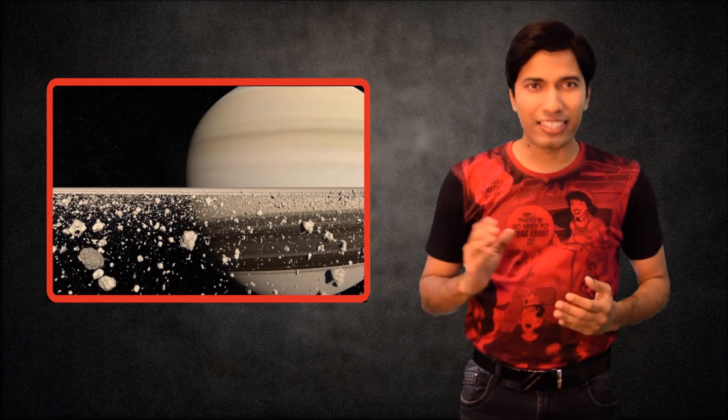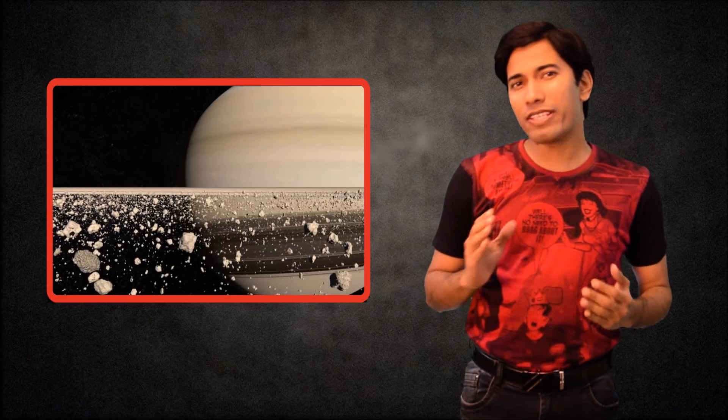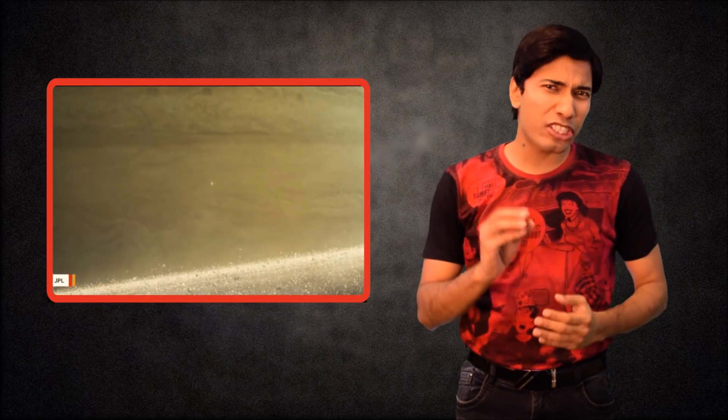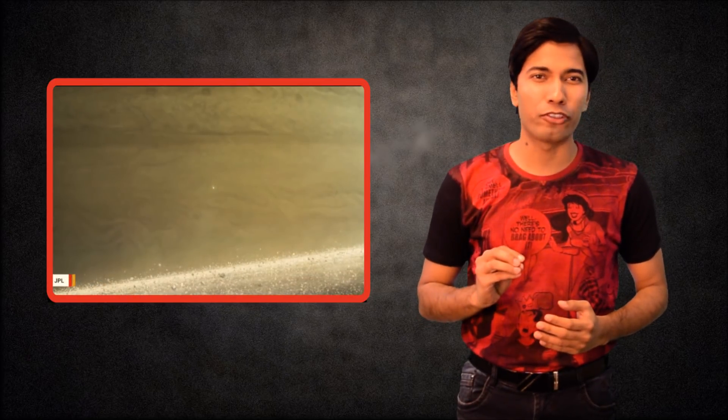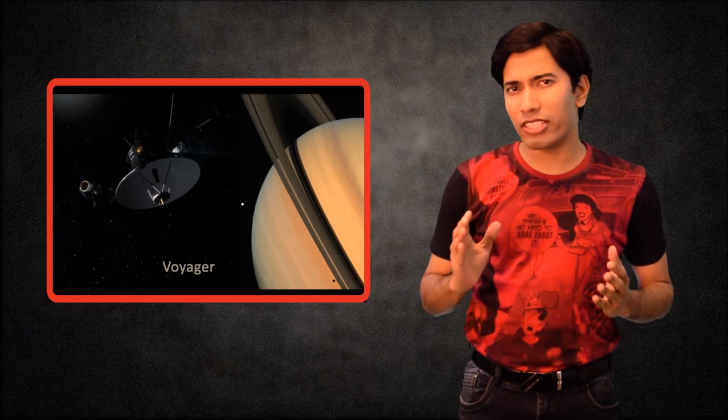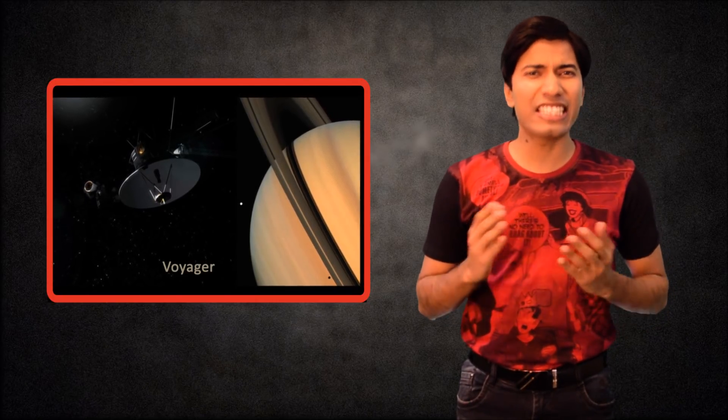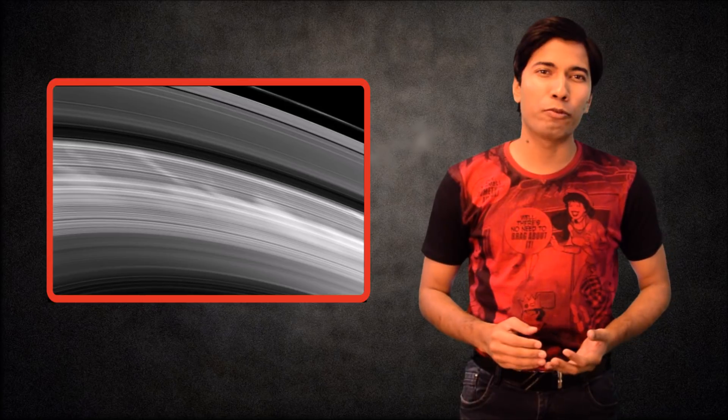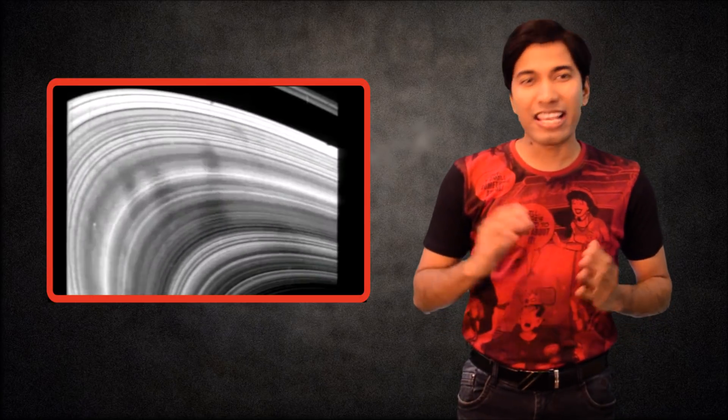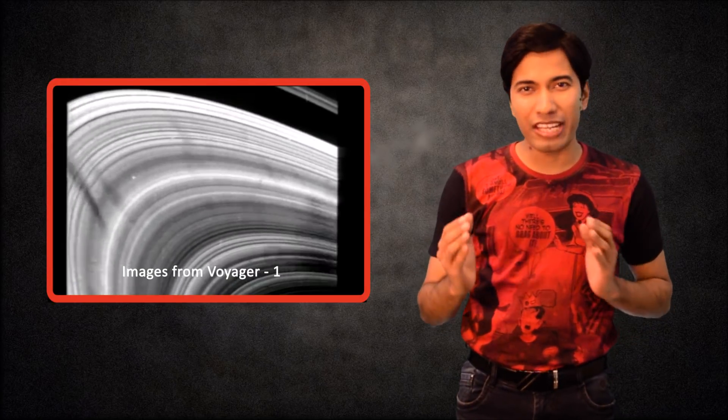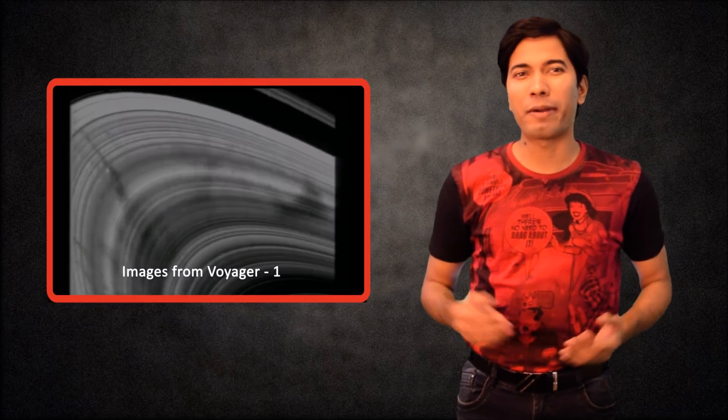Until 1980, the structure of Saturn's rings was explained as being caused exclusively due to the action of gravitational forces. Then images from Voyager spacecraft showed radial structures in Saturn's B-ring, also known as spokes, which could not be explained in this manner, as their persistence and rotations around the ring were not consistent with the orbital mechanics.